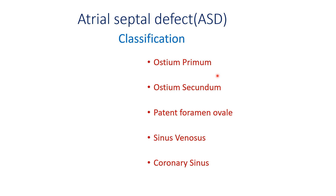Ostium primum is seen in 20% of patients. There is a gap in the lower part of the atrial septum and it is associated with Down syndrome. Ostium secundum type is the most recognized; the gap is located in the central part of the atrial septum, seen in 75% of cases, and can be treated percutaneously with catheters.